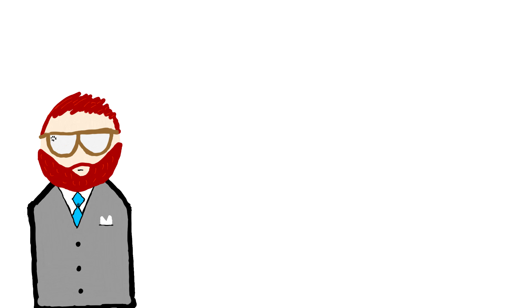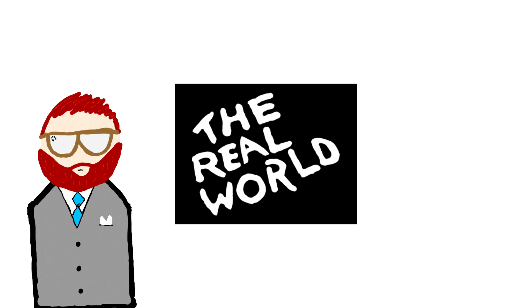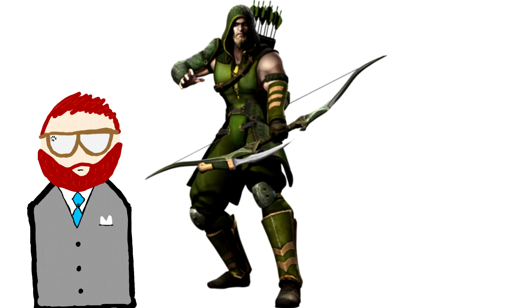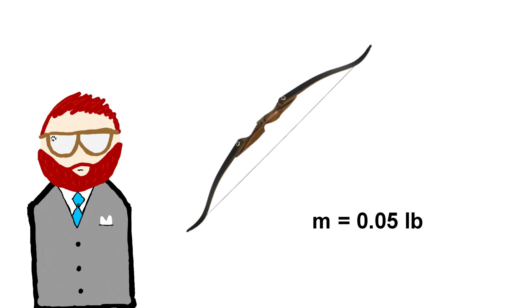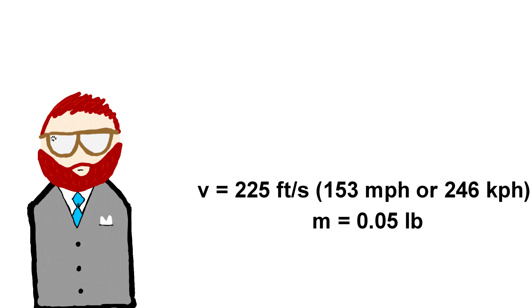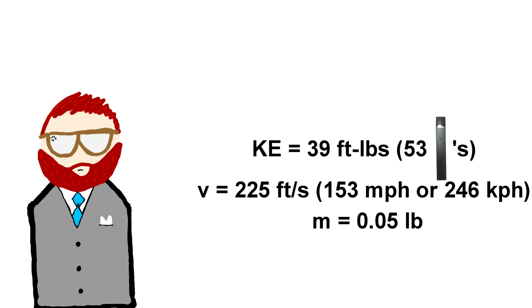Before we can look at how much kinetic energy the railgun can produce, we first have to establish a real-world equivalent to the world of D&D. For this, we'll be looking at your basic arrow. According to the Player's Handbook, an arrow weighs 0.05 pounds. Next, we have to find the velocity at which an arrow travels. According to the Soror Valley Archers website, a recurve bow — your standard fantasy bow — can fire an arrow at 225 feet per second. We then plug this into our kinetic energy equation and find that an arrow has about 39 foot-pounds of kinetic energy.